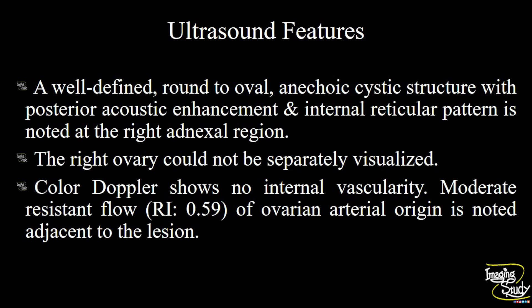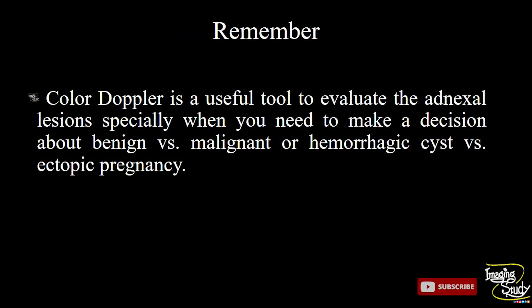In summary, we have a well-defined round to oval anechoic cystic structure with posterior acoustic enhancement and internal reticular pattern at the right adnexal region. The right ovary could not be separately visualized, suggesting ovarian origin. Color Doppler shows no internal vascularity, and moderate resistance flow with RI of 0.59 of ovarian arterial origin is noted adjacent to the lesion. The take-home message: color Doppler is a useful tool to evaluate adnexal lesions, especially when deciding between benign or malignant hemorrhagic cyst or ectopic pregnancy.